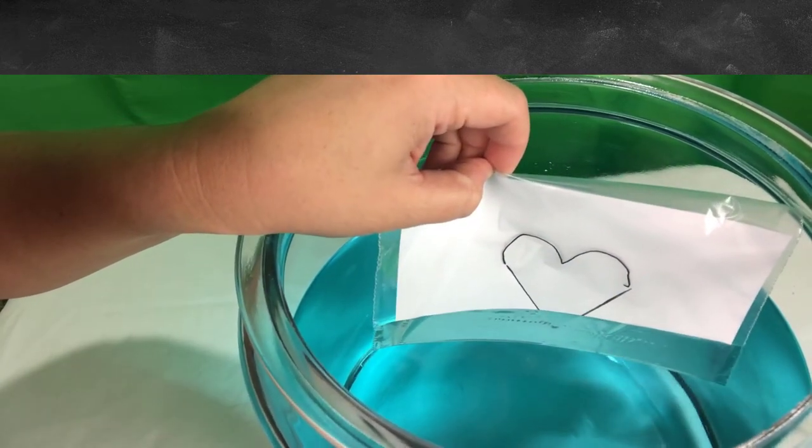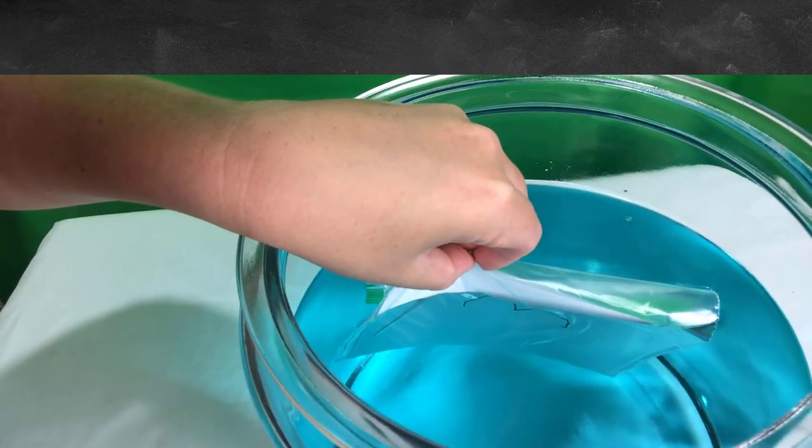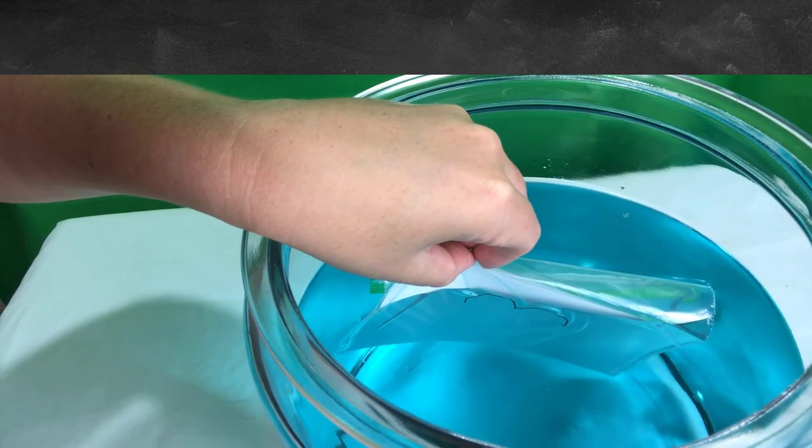What is happening here? How come you cannot see the full shape? Show your students that it's actually a full heart, but when you put it in the water, the bottom disappears. What's happening?